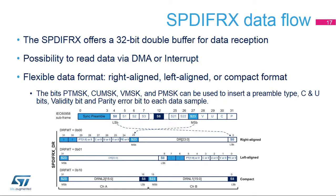It is up to the application to set the SPDIF-RX to state idle and then set it again to state sync or state RCV. The SPDIF-RX offers a 32-bit double buffer for data reception. The application can read the received data using DMA or interrupts. Various data formats are available: right-aligned, left-aligned, or compact format.